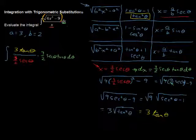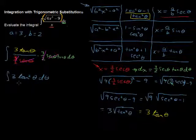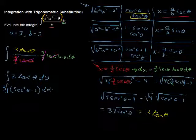Let's cross out the 3 halves from numerator and denominator, and cancel secant theta. Now we're left with the integral of 3 tangent squared theta dθ. We can rewrite tangent squared as secant squared theta minus 1 using our identity, so this is 3 times the integral of secant squared theta minus 1 dθ. This integrates to 3 times tangent theta minus theta, plus the constant of integration.